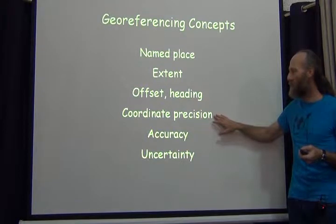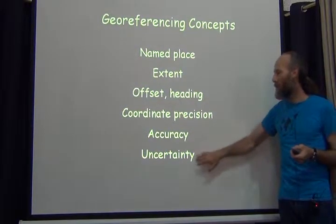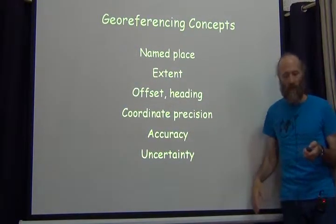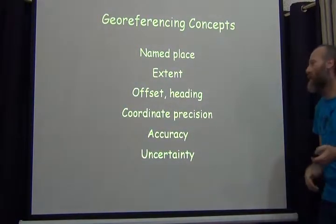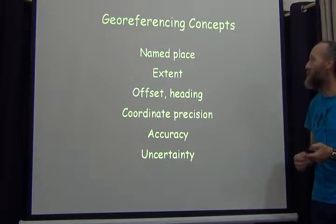The first is coordinate precision, the second is accuracy, and the third is uncertainty. I'll try to distinguish each of those from each other.